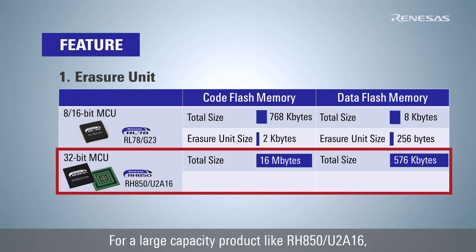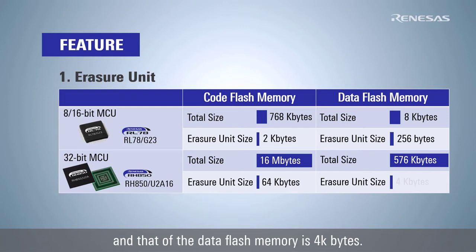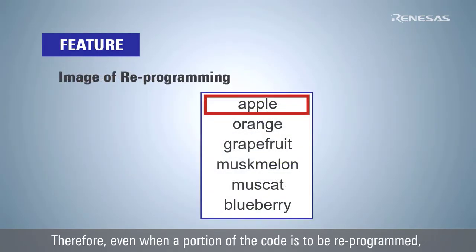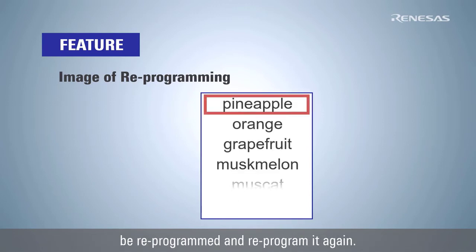For a large capacity product like RH850U2A16, the erasing size of the code flash memory is 64 kilobytes. Therefore, even when a portion of the code is to be reprogrammed, it is necessary to erase all including the portions that cannot be reprogrammed and reprogram it again.